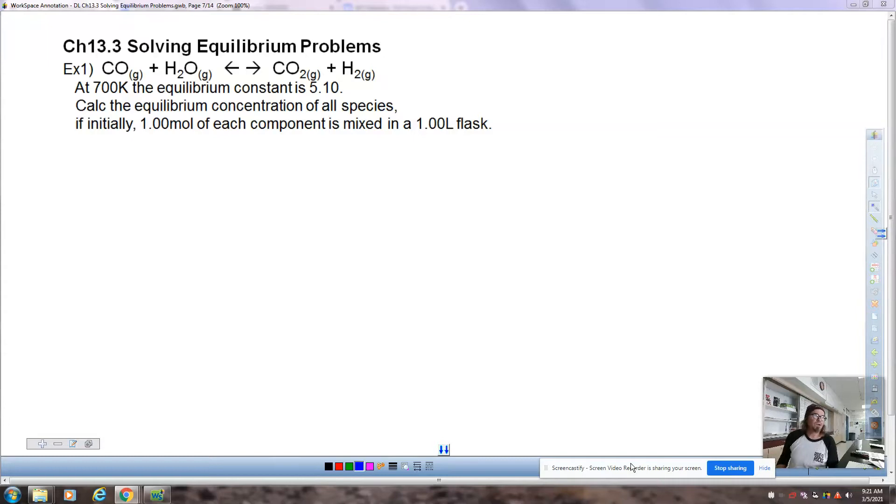Good morning. We are looking at section 13.3, solving equilibrium problems. This is one of the harder sections of chapter 13, so be prepared to pause a lot and copy stuff down and make sense of what you're doing as you go along. Here's your reaction. Equilibrium constant 5.10. Calculate the equilibrium concentration of all species, and initially we have one mole of each of the components mixed in a one liter flask.